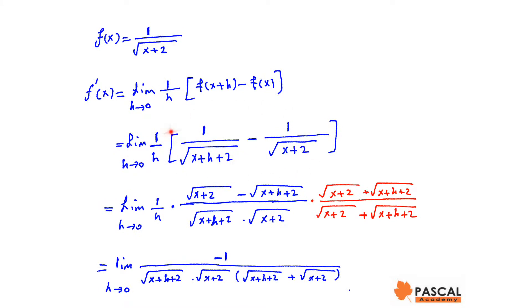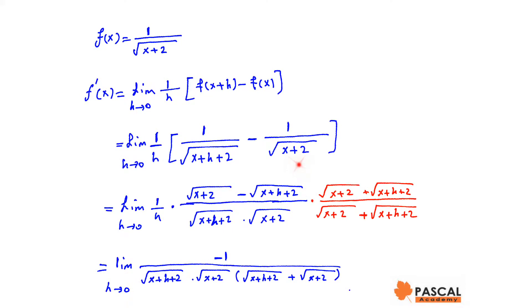We take the common denominator here. The common denominator between 1 over √(x+h+2) and 1 over √(x+2) is √(x+h+2) times √(x+2). We multiply the first fraction by √(x+2) and the second fraction by √(x+h+2).